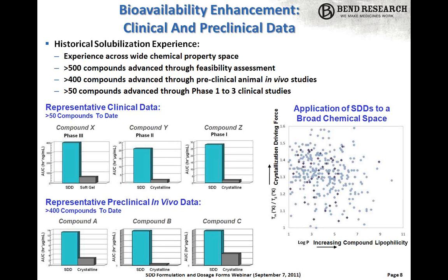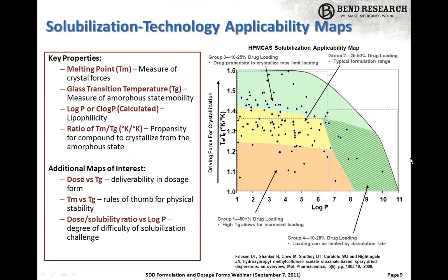The technology is broadly applicable to a large range of chemical compounds. A map showing a simplified representation of chemical space illustrates this — compounds we've formulated in SDDs are distributed all over the map. We bring both empirical experience and fundamental scientific understanding to bear to formulate properly and quickly with the minimum time and cost. One method is the use of chemical space maps, where the X-axis is lipophilicity or log P and the Y-axis is the driving force for crystallization — the ratio of melting point over glass transition temperature in Kelvin.